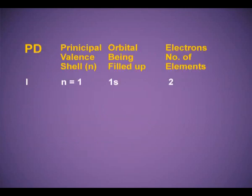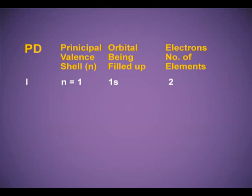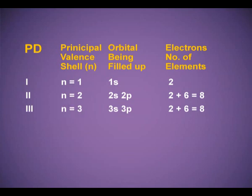Period 1: the principal quantum number n = 1; the orbital being filled is 1s. Since 2 electrons can be accommodated in the s orbital, there are 2 elements in the first period. Period 2: n = 2; orbitals being filled are 2s and 2p. The s orbital accommodates 2 electrons and the p orbital 6 electrons — 8 total, so 8 elements. Period 3: n = 3; 3s and 3p orbitals — similarly 8 electrons and 8 elements.